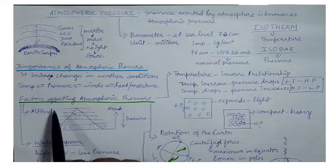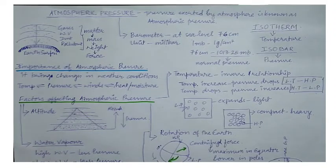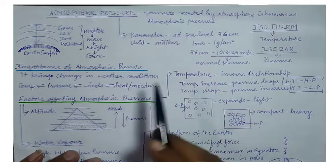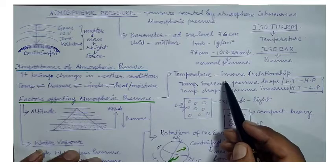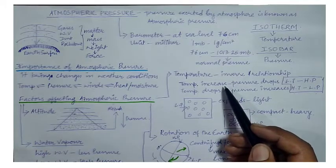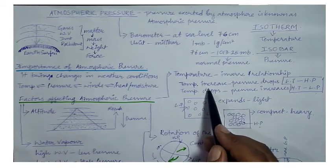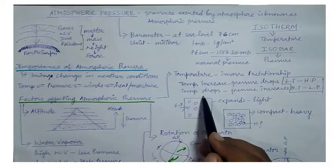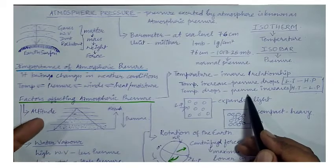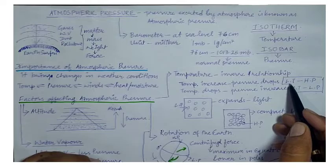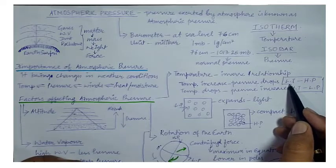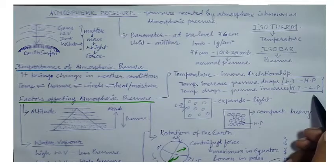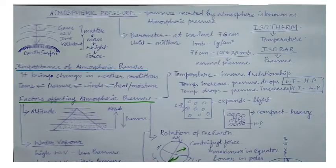Let us now discuss the different factors which affect atmospheric pressure. The first factor is temperature. Temperature and pressure are inversely related to each other — when temperature increases, pressure decreases, and when temperature decreases, pressure increases. Simply put, when temperature is low, pressure is high, and when temperature is high, pressure is low.